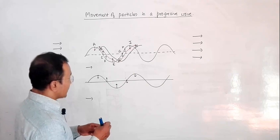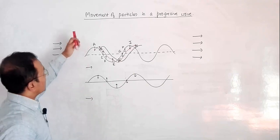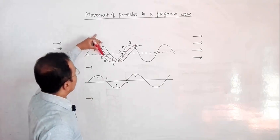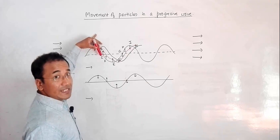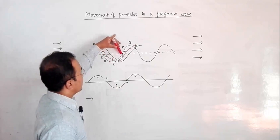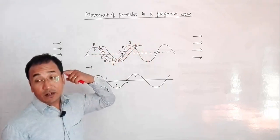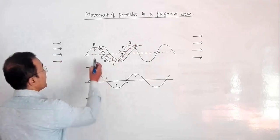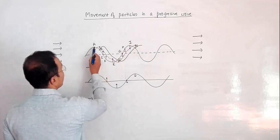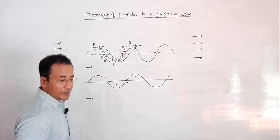Regarding velocity and forces: at the crest, velocity is 0 because the particle is about to return. At the midpoint, velocity is maximum — this is simple harmonic motion. At the trough, velocity is again 0. So velocity alternates: 0 at crests and troughs, maximum at midpoints. Regarding acceleration and force: acceleration and force are maximum at the crests and troughs, and zero at the midpoints.